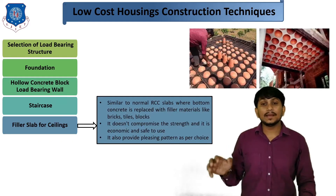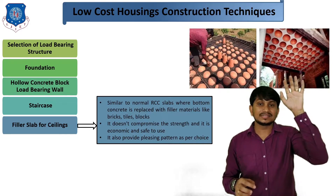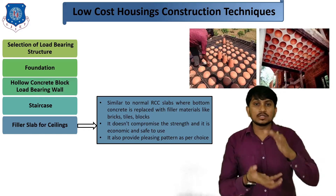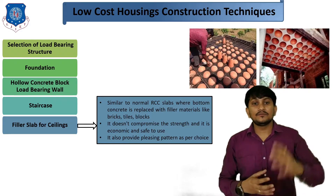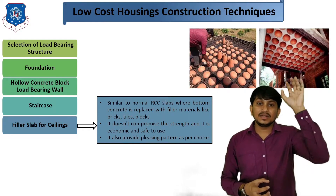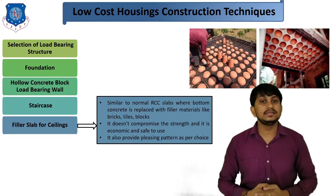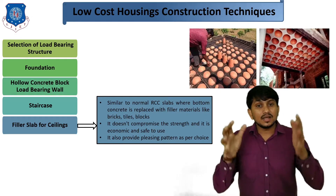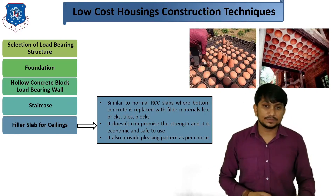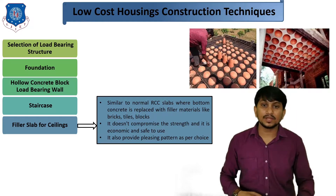Fifth technique is filler slab for ceilings. You use this type of slab for ceilings. It is similar to normal RCC slabs where the bottom concrete is replaced with filler materials like bricks, tiles, blocks, etc. Because of using this filler material, overall consumption of concrete in the slab is reduced. It does not compromise the strength and is economical and safe to use. It also provides a pleasing pattern as per the user's choice.